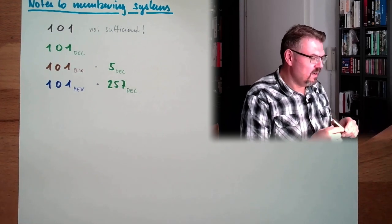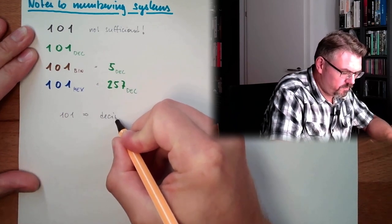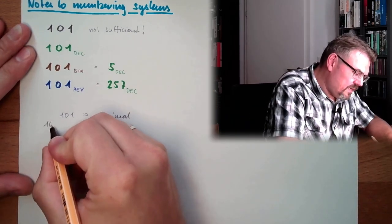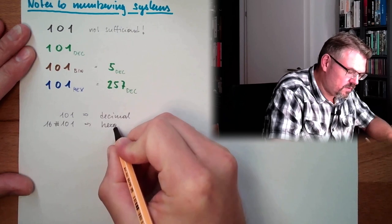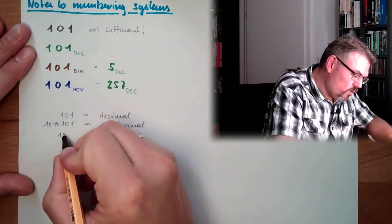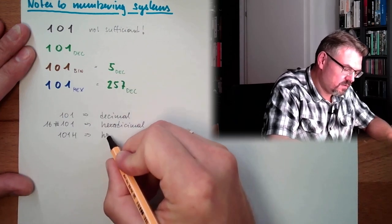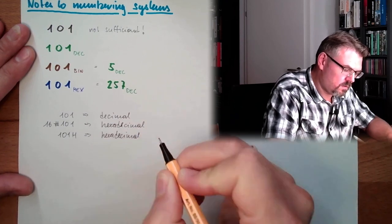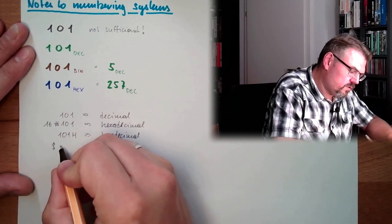So for instance, 101 is decimal. To display hexadecimal, some say it's 16 hash tag 101. So this is hexadecimal. One possibility. Another possibility would be 101 h for other systems. Hexadecimal. And sometimes it's just one other sign. For instance, dollar is often used. The dollar sign.